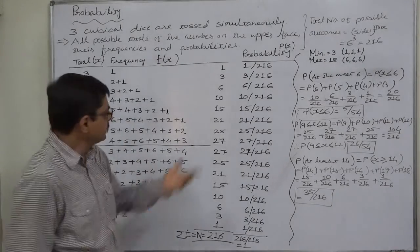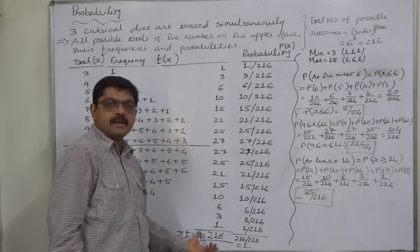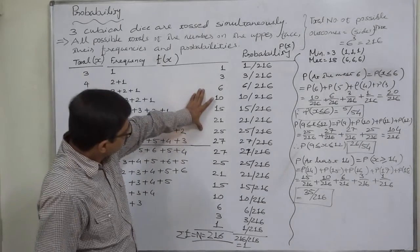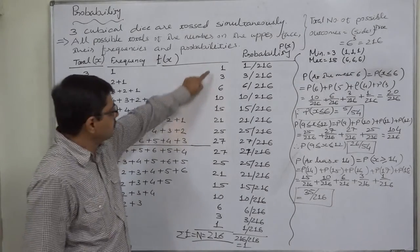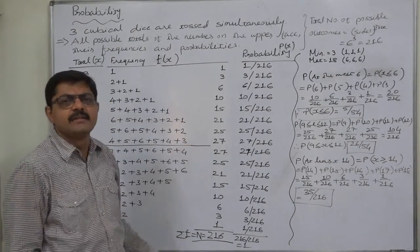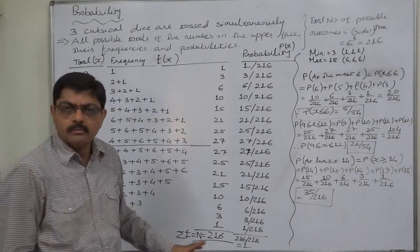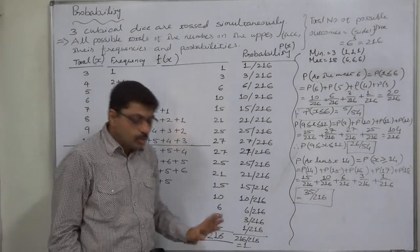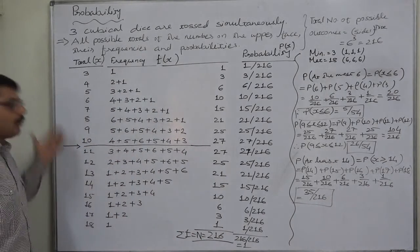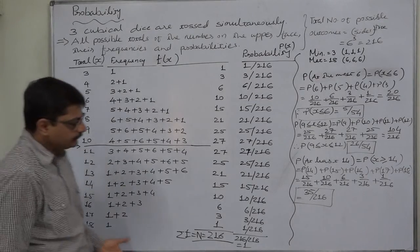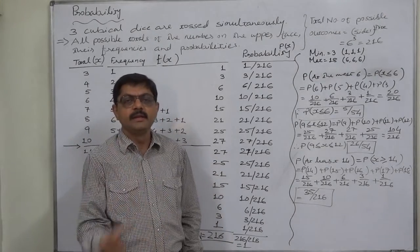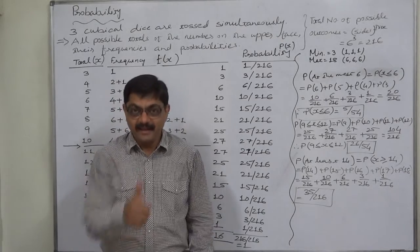Another option is to just remember the series, because you only need to remember half of it: 1, 3, 6, 10, 15, 21, 25, 27. The other half is just the reverse. It is up to you how to remember — whether the frequency pattern or anything else — you can calculate the probability within moments. That's it. Thank you.